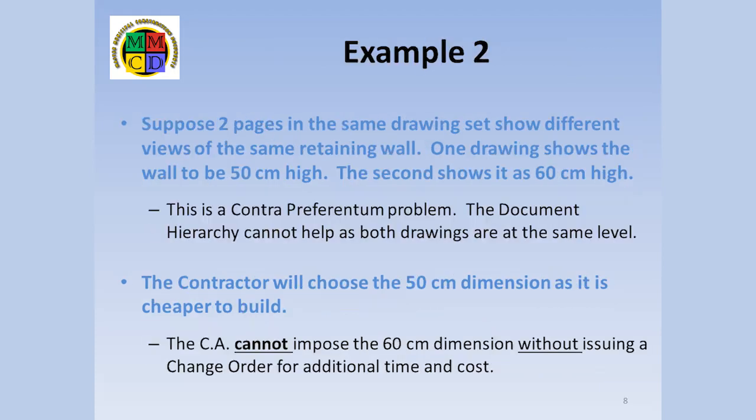Here's an example. Suppose two pages in the same drawing set show different views of the same retaining wall. One drawing dimensions the wall as 50 cm high. The second shows elevations of the top and bottom of the wall, with the difference being 60 cm. This is a contra preferentum problem. The document hierarchy cannot help, as both drawings are at the same level. The contractor will choose the 50 cm dimension, as it is cheaper to build. The CA cannot impose the 60 cm dimension without issuing a change order for additional cost and possibly time.